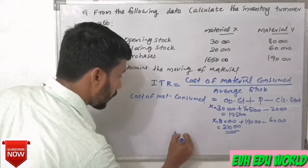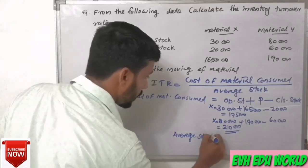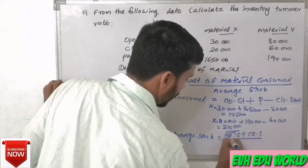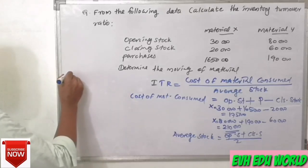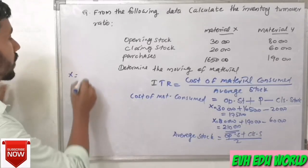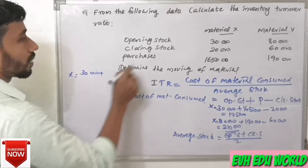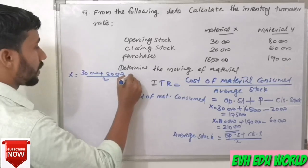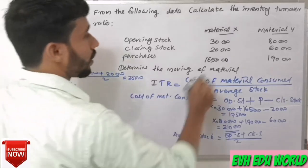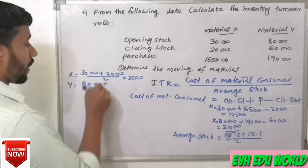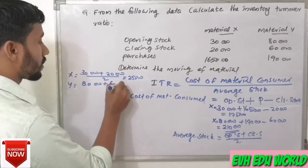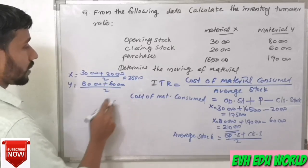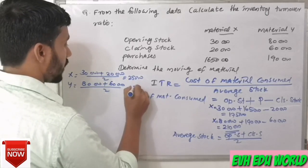Next, we take the average stock. Average stock equals opening stock plus closing stock divided by 2. For Material X: 30,000 plus 20,000 divided by 2 equals 25,000. For Material Y: 80,000 plus 60,000 divided by 2, that is 1,40,000 divided by 2, which equals 70,000.